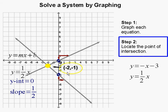So our answer is x equals negative 2 and y equals negative 1. That is the solution for both of our equations, and this completes our problem.